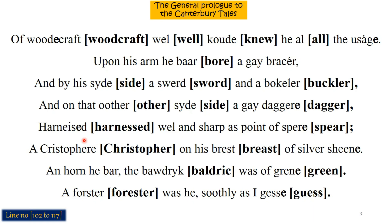The Yeoman was wearing on his breast a silver sheen image of Saint Christopher. 'Silver' means silver color, and 'sheen' is an archaic word meaning shining or bright. So the Yeoman was wearing a bright silver-colored Saint Christopher medallion as a lucky charm on his breast.